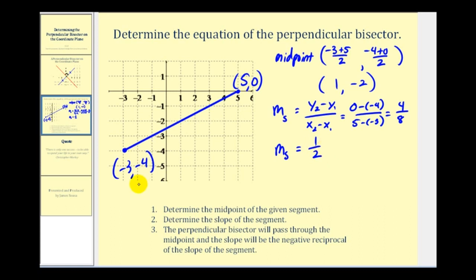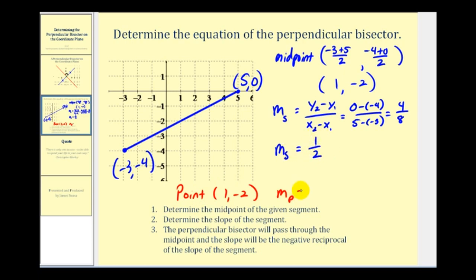So the perpendicular bisector passes through the point (1, -2), and the slope of the perpendicular bisector is going to be the negative reciprocal of one-half. If we flip it and change the sign, we get negative two over one, or just negative two.